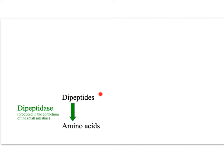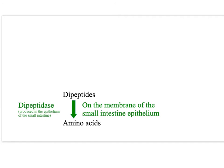Finally, the dipeptides are hydrolysed — the peptide bonds are broken by hydrolysis into amino acids — by the enzyme dipeptidase. Similar to the enzymes that break maltose down into glucose, dipeptidase is produced in the epithelium of the small intestine, and digestion occurs on the membrane of the small intestine epithelium. Dipeptidase is found in the membrane of the epithelial cells of the small intestine.